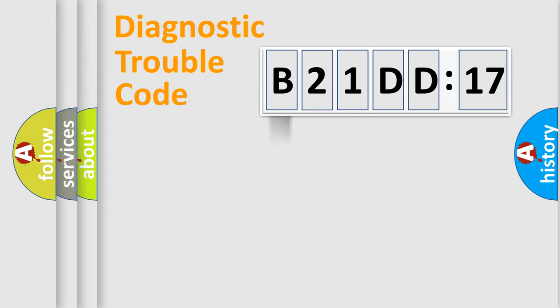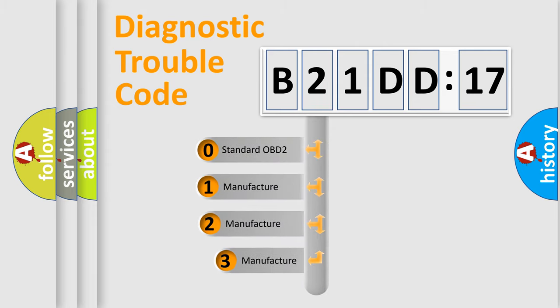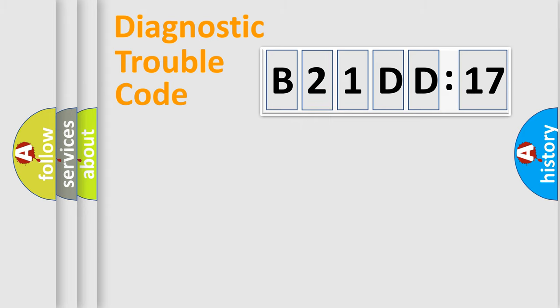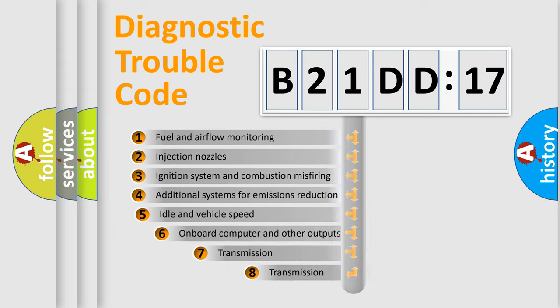Powertrain, Body, Chassis, Network. This distribution is defined in the first character code. If the second character is expressed as zero, it is a standardized error. In the case of numbers 1, 2, or 3, it is a manufacturer-specific error expression.